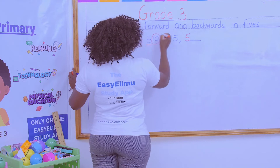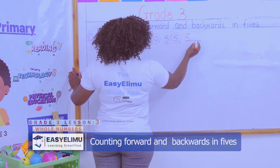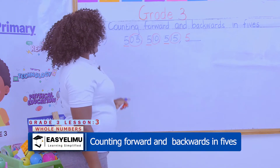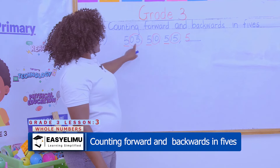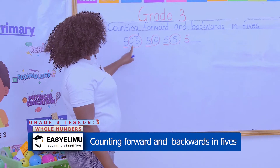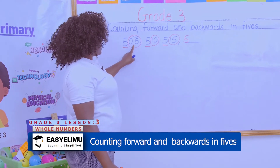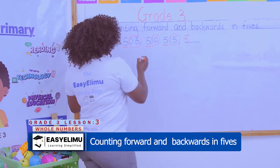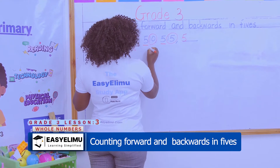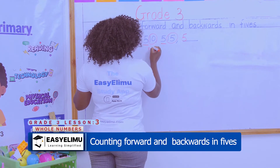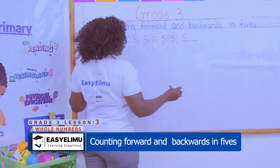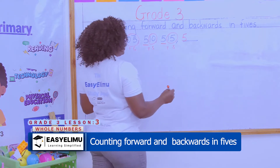So which numbers are we working with? We are working with 0, 5, 10, 15. So we need to get the missing numbers. Yes, Oscar — what can you decide? I can decide to add plus 5 to get 10, plus 5 to get 15, plus 5 to get 20.